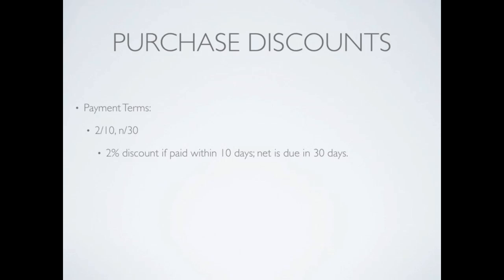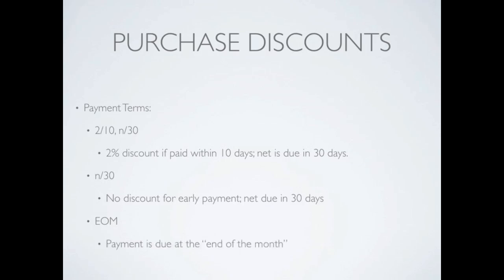The terms can be in any form. For example, 1/10 net 45 would mean a 1% discount if paid in 10 days, or the net is due in 45 days. How about net 30? There's no discount here for early payment and the net is due in 30 days. It could be net 45, net 60 — whatever the terms of the business are. One more we'll look at is EOM, which simply stands for end of month, meaning your payment is due at the end of the month.